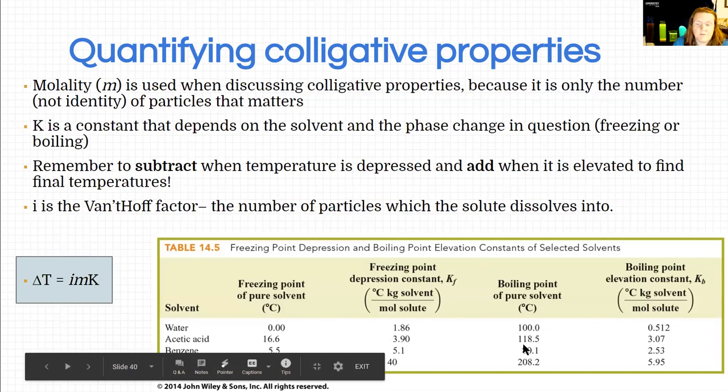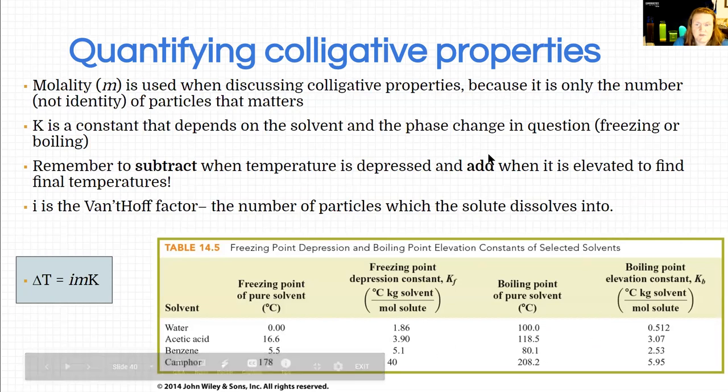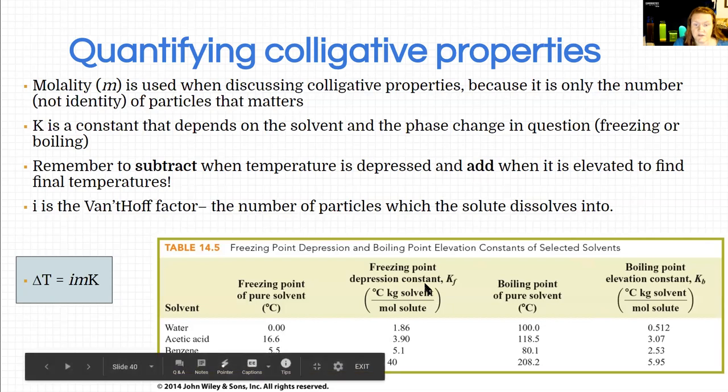So anyway, these are some handy constants you can use in your calculations. Usually, at least in mastering chemistry, it will give you the values you need. And on your final exam, those are also provided. You do need to usually be able to choose which solvent you're going to be using based on the question and which constant, Kf or Kb.